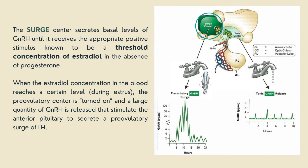The surge center secretes basal levels of GnRH until it receives the appropriate positive stimulus, known to be a threshold concentration of estradiol in the absence of progesterone. When estradiol concentration in the blood reaches a certain level, the pre-ovulatory center is turned on and a large quantity of GnRH is released, stimulating the anterior pituitary to secrete a pre-ovulatory surge of LH. This is because the surge center is sensitive to positive feedback, secreting high amplitude, high frequency pulses of GnRH like a gushing wide-open faucet in a relatively short period after estradiol reaches a threshold concentration.